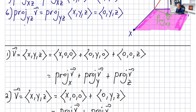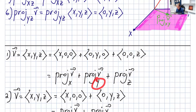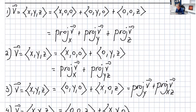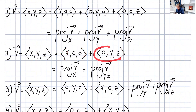Vector v can be written as (x,0,0) + (0,y,0) + (0,0,z) — these are just the projections of v onto the x-axis, y-axis, and z-axis respectively. We can also write v as (x,0,0) + (0,y,z), which is the projection onto the x-axis plus the projection onto the yz plane.